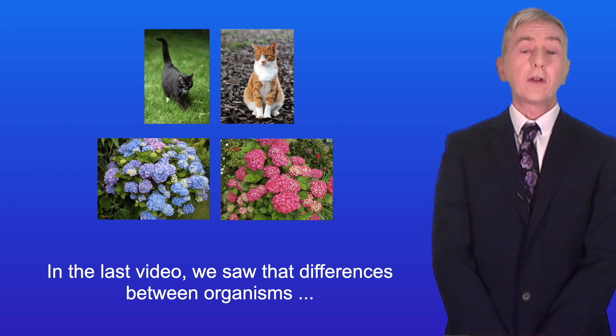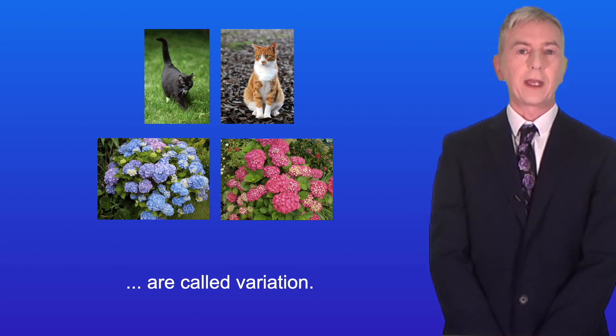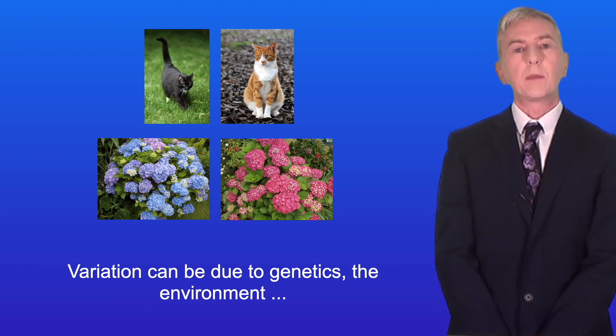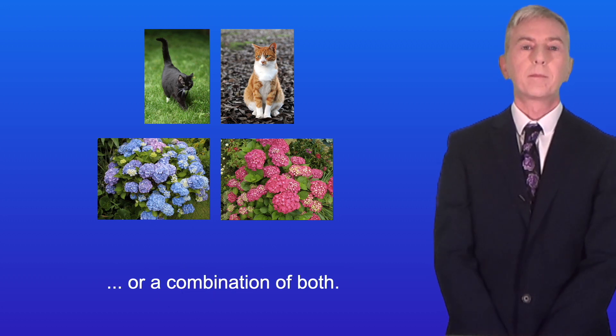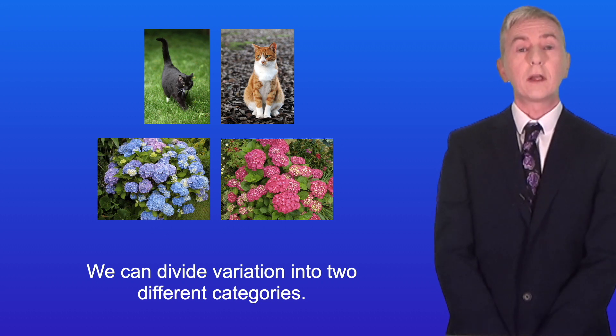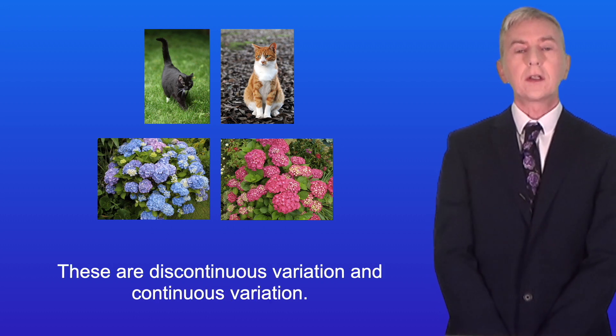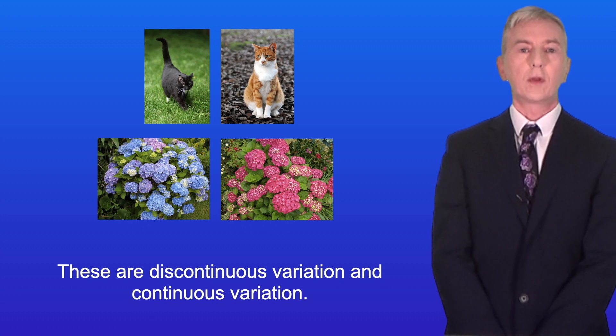In the last video we saw that differences between organisms are called variation, and variation can be due to genetics, the environment, or a combination of both. Now we can divide variation into two different categories. These are discontinuous variation and continuous variation.